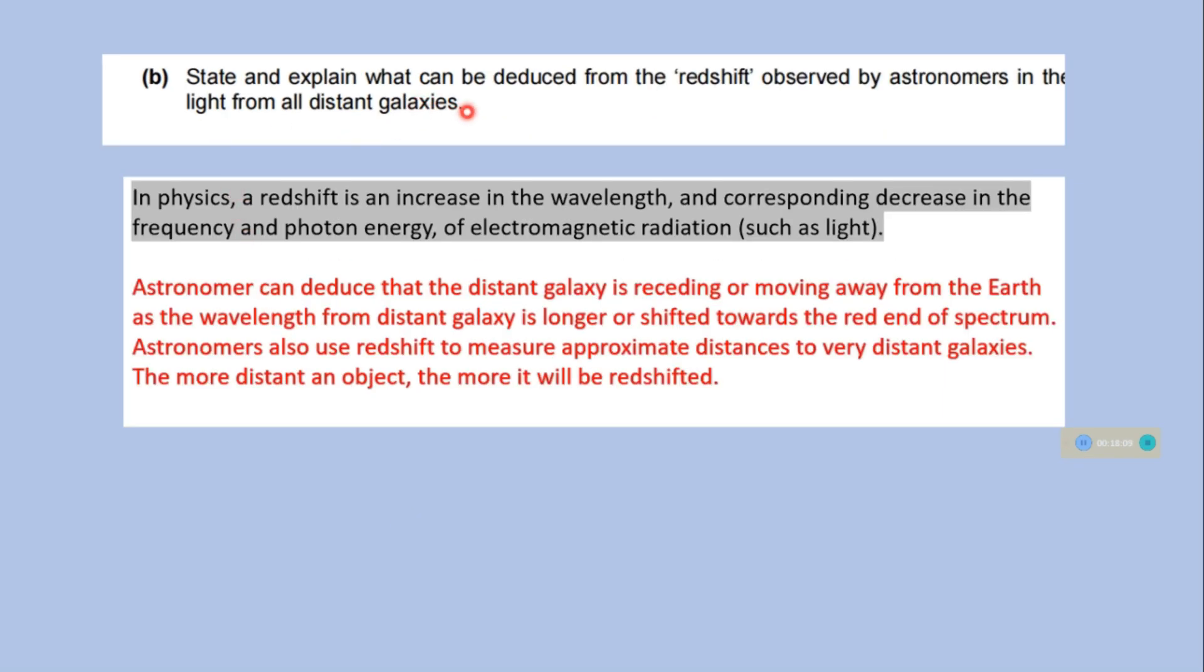State and explain what can be deduced from the redshift observed by astronomers in the light from all distant galaxies. What is a redshift? In physics, a redshift is an increase in the wavelength and corresponding decrease in the frequency and photon energy of electromagnetic radiation such as light. Astronomers can deduce that the distant galaxies are receding or moving away from the earth as the wavelength from distant galaxies is longer or shifted toward the red end of the spectrum. Astronomers also use redshift to measure approximate distances to very distant galaxies. The more distant an object, the more it will be redshifted.